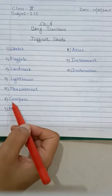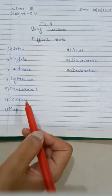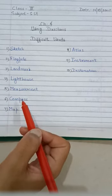The sixth word is compass. C-O-M-P-A-S-S, compass. It means an instrument which is used to find direction.